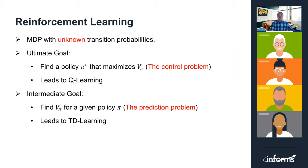The underlying framework of reinforcement learning is essentially Markov decision processes, except that the transition probabilities are unknown to the agent. The ultimate goal is to find an optimal policy pi star, which is called the control problem, and as we will see, that directly leads to the Q-learning algorithm. An intermediate goal is to estimate the value function of a given policy pi, called the prediction problem or the policy evaluation problem. This is non-trivial because even if the policy is given, the transition probabilities are still unknown, so we cannot directly compute the value function. This leads to the TD learning method.